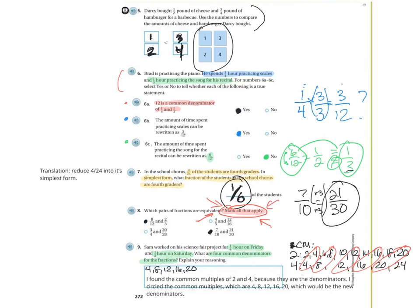That brings us to the end of video one of our chapter six review. Tune in for my next video — the second chapter six review covering pages 273 and 274. Until then, if you like it press the like button, leave a comment if you have questions, and if you'd like me to explain equivalent fractions, simplest form, or ordering fractions in more detail I'm happy to do that. This is Mr. Carey signing off.